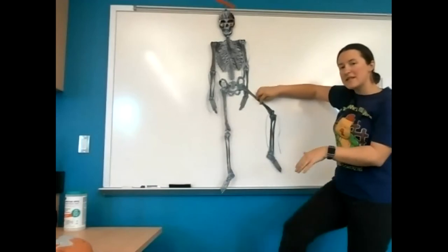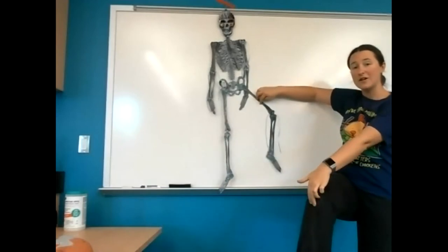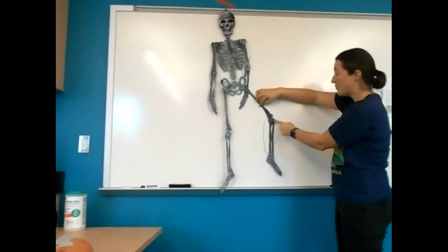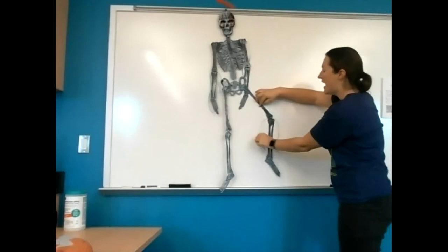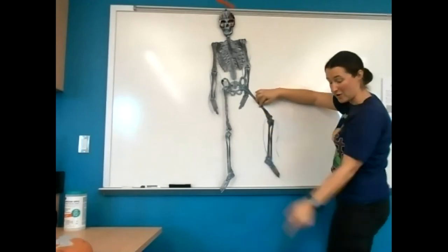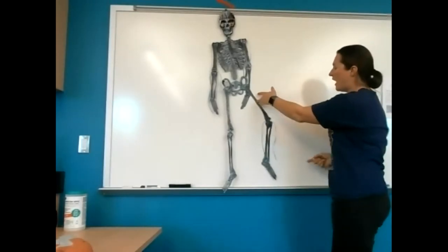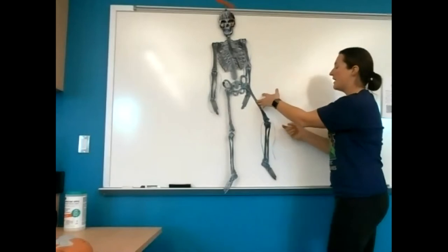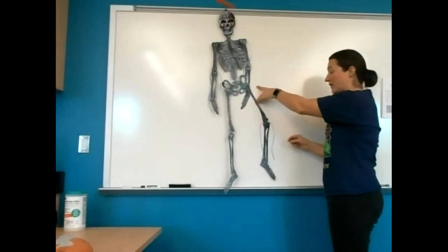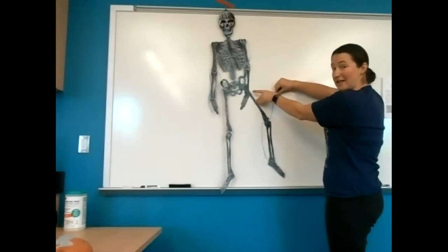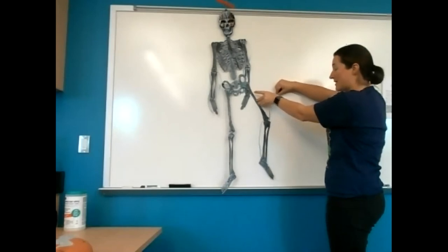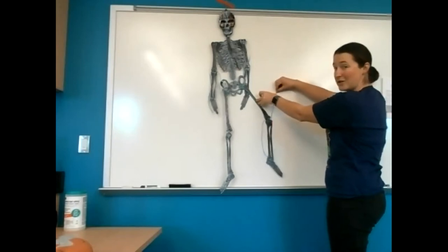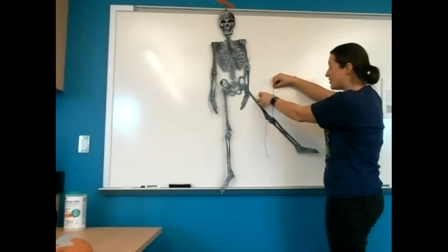We have muscles attached to the front side of our knee as well as to the back side. I've attached some strings here — the insertion point is on the front of the tibia, and this one is on the back of the tibia. When insertion is pulled towards origin, what we get is extension — like kicking out of the leg. Pulling on the front insertion produces knee extension.